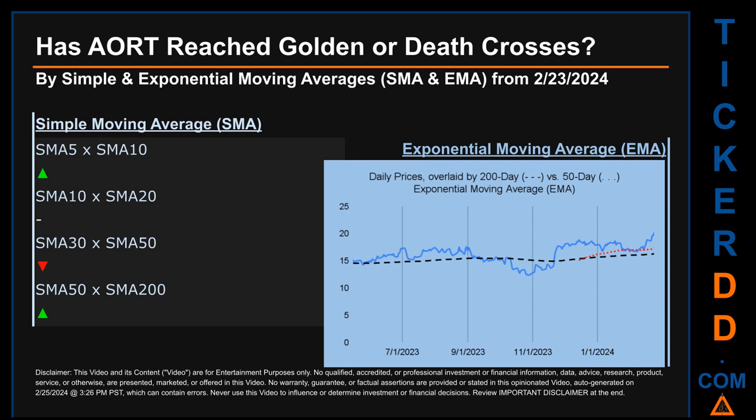Has AORT price reached golden or death crosses? Golden cross and death cross are basic signals that compare average prices across two specified trade day ranges — a short-term versus a long-term range, for example five-day versus ten trade days. A golden cross is a bullish signal; it appears when a ticker's short-term moving average crosses above its long-term average. Vice versa, a death cross is a bearish signal when the short-term crosses below its long-term moving average.